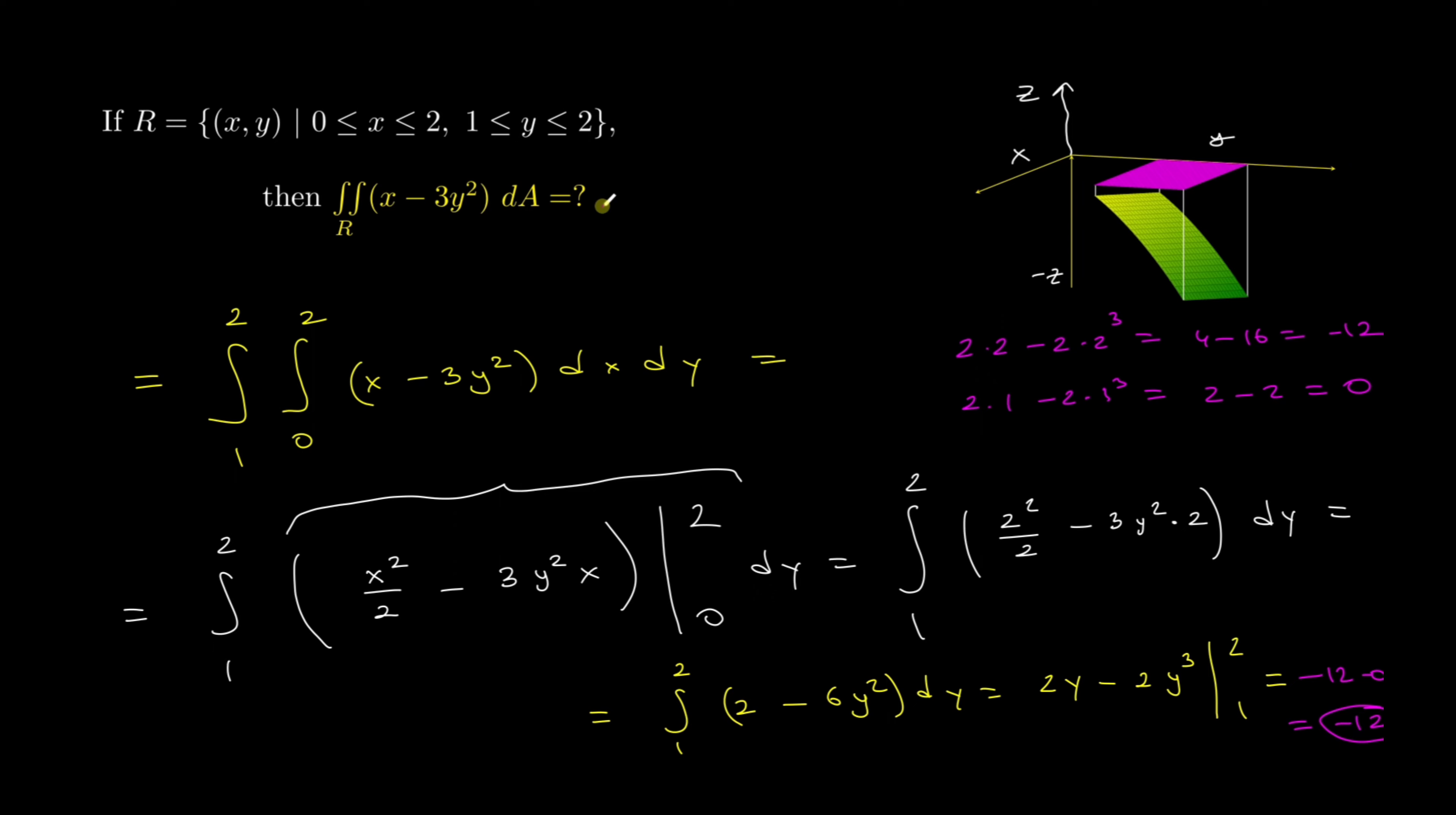So the result of this integral is just negative 12. So as expected, because this surface x minus 3y squared is completely below the xy-plane, which makes the z values negative. So which makes the total, this volume is a negative expression.